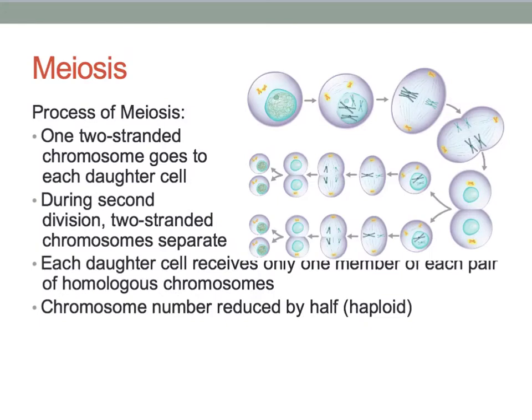Remember that at the beginning of this process each chromosome replicates to contain two chromatids. During meiosis the pair of chromatids meet and separate. One of the homologous chromosomes goes to each daughter cell during the first division. During the second division the chromatids within each chromosome separate, and each daughter cell receives only one chromatid.